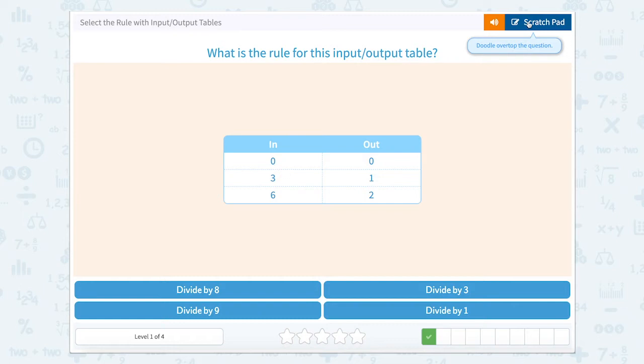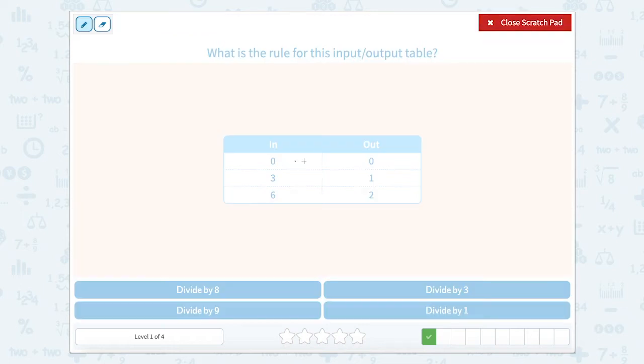What is the rule for this input-output table? So remember that we're going across from 0 to 0, from 3 to 1, and from 6 to 2. So I'm trying to figure out what I'm dividing by to get across.